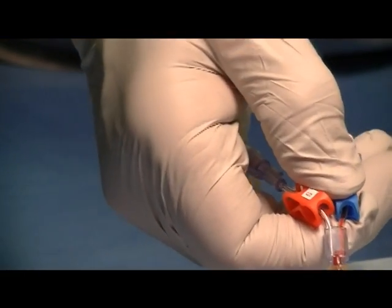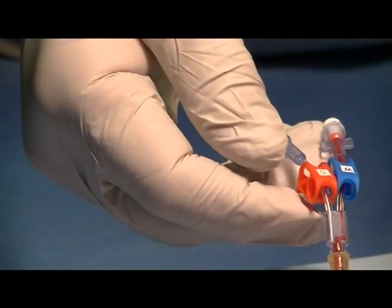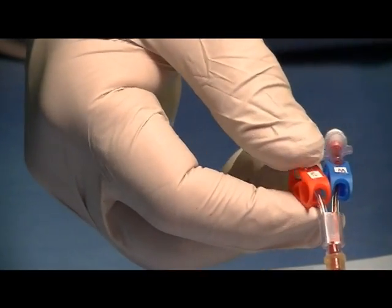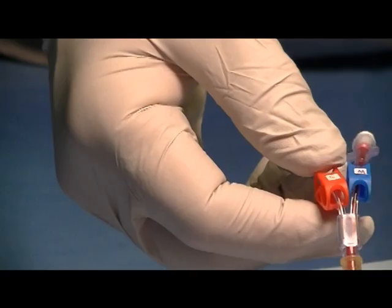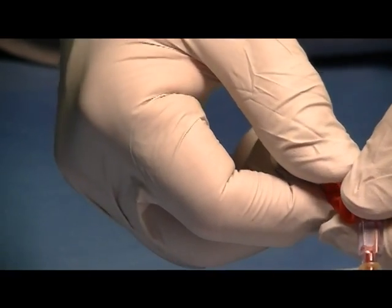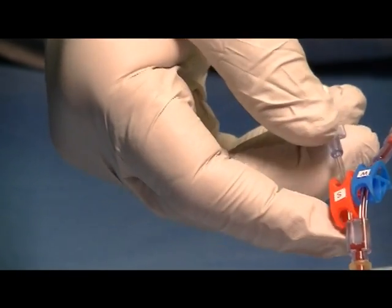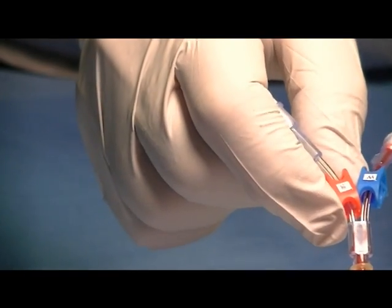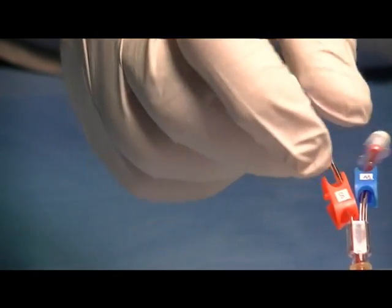Then you would reclamp that line and go to the sample side, release the red clamp and allow the blood to flow up to the vent plug.